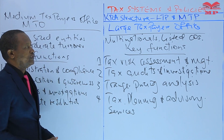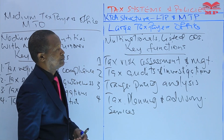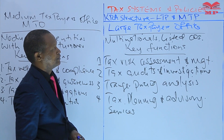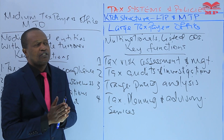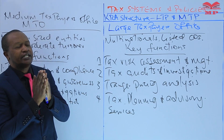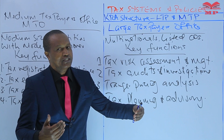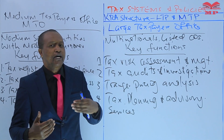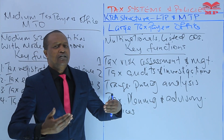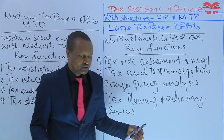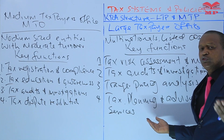So we've identified four key functions of the Medium Taxpayer Office and four functions of the Large Taxpayer Office. In brief, this is the KRA structure with special reference to the two offices — the Large Taxpayer Office and the Medium Taxpayer Office. These are dedicated offices that reflect the recognition that different taxpayer segments have unique needs and require specialized expertise. This approach by KRA aims to enhance the efficiency and effectiveness of tax administration, ensuring all taxpayers receive the support they need to comply with tax laws and contribute to Kenya's revenue base.